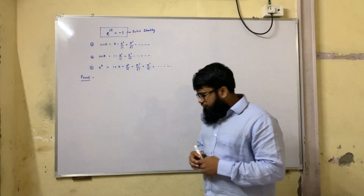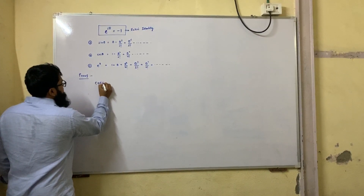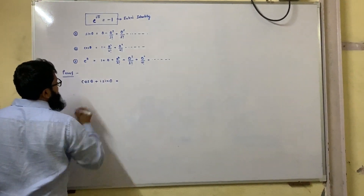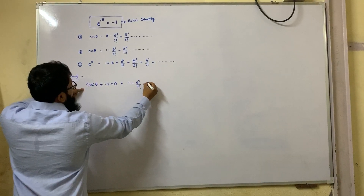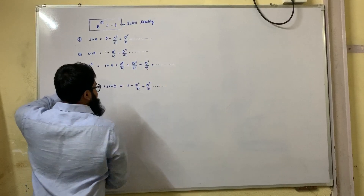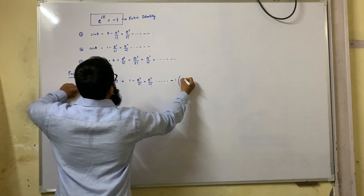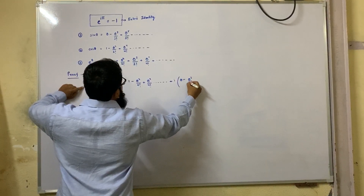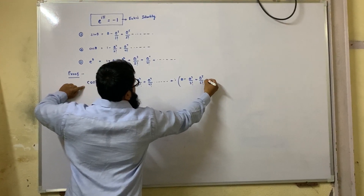Let's start the proof. Let us take cos theta plus i sine theta. Cos theta is 1 minus theta square by 2 factorial plus theta raise to 4 by 4 factorial, and so on, plus i times sine theta, which is theta minus theta cube by 3 factorial plus theta raise to 5 by 5 factorial, and so on.